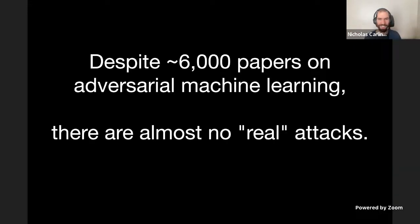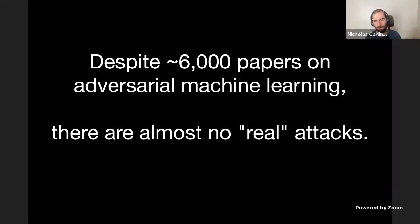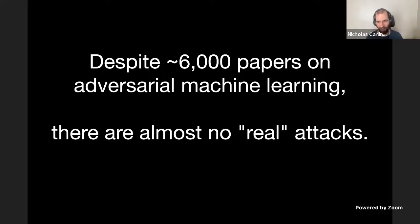Maybe a controversial take: despite the fact that there are 6,000 papers on adversarial machine learning, there are basically no real attacks. What do I mean by this? Let's compare for analogy what happens in computer security. Papers like the one introducing return-oriented programming have maybe 1,000 to 2,000 citations and literally changed the way we design chips — Intel introduced new hardware instructions to prevent attacks researchers developed 10 years ago.